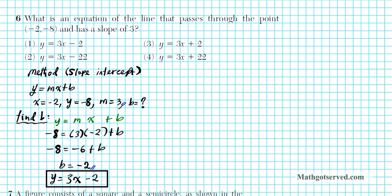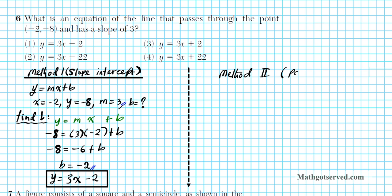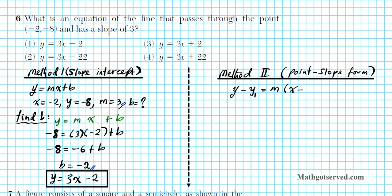Now let's try method 2, the point-slope form. This method doesn't require finding an intermediate variable — we can go directly from the setup to the final result. But you have to remember the formula accurately. The point-slope form of the equation of a line is y minus y1 equals m times x minus x1.